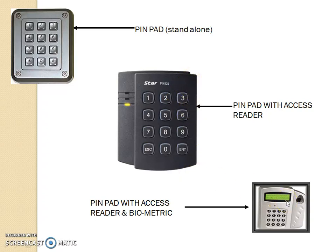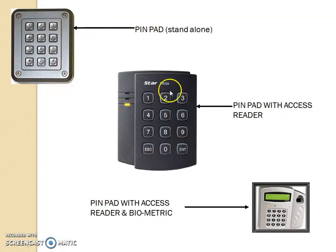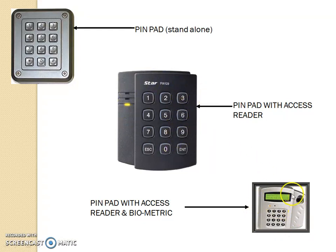The third option is a pinpad with an access reader and biometric, which is considered the next level of security, where the person has to fix their thumb impression into the biometric reading system. On the order of security: a pinpad alone can be accessed by feeding a number; the second level requires an additional card to swipe in the machine; and the third level, where you fix your thumb impression, is considered the topmost security system.